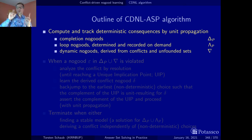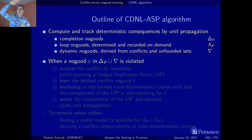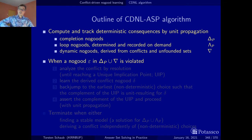Either we get a solution — but that's not so interesting right now — or we hit a conflict. This means that a no-good has been violated, which in turn means that the no-good has been found as a subset of the current assignment. Somehow on our trip from the empty assignment to where we are right now, all the literals of this no-good are contained somewhere, spread over the whole assignment. Such a no-good is called a conflict no-good. A conflict no-good is a no-good that is contained in the current assignment.